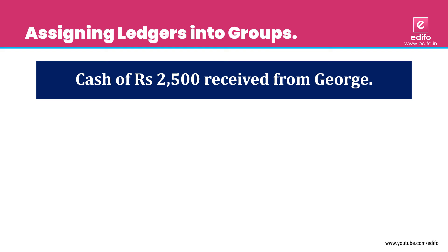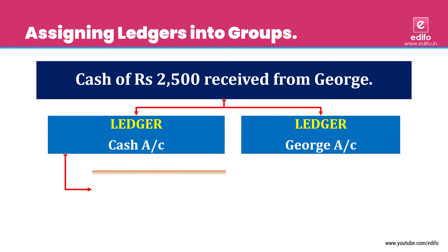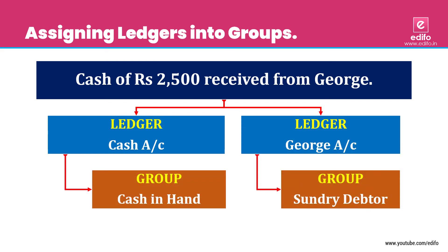Next transaction: cash of Rs. 25,000 received from George. George is a sundry debtor who paid the full amount of his credit purchase. Two aspects: cash account and George account. Cash account is 'Cash in Hand' and George account is under 'Sundry Debtors'. Since he paid all the amount, the sundry debtor entry will be cancelled.